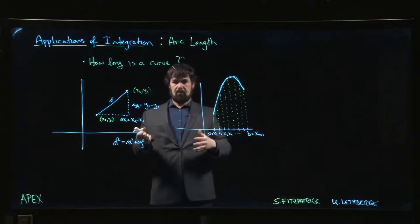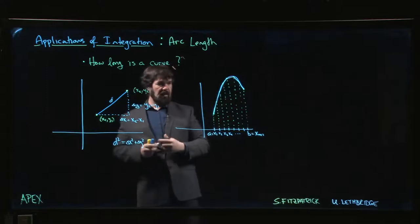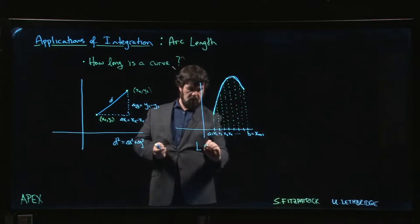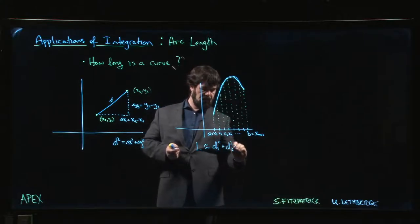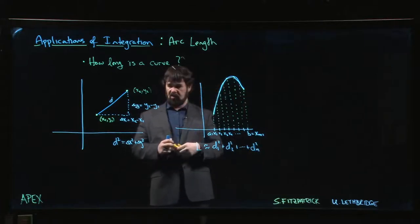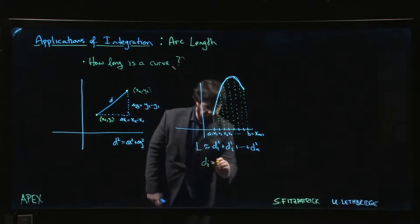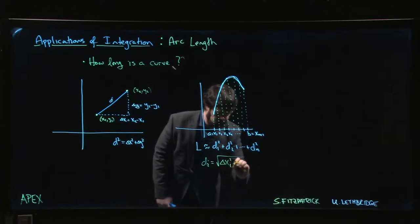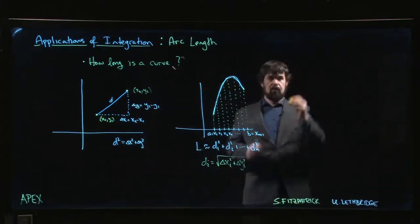This piecewise linear path is a reasonable approximation to the original path, and as you take more and more points the approximation gets better and better. So the length of the curve is approximately the sum of all those individual distances: d_i equals the square root of delta x_i squared plus delta y_i squared. It's standard practice to use a uniform partition.